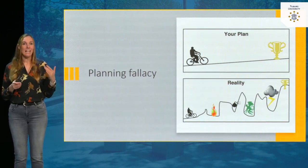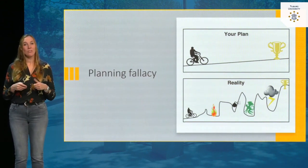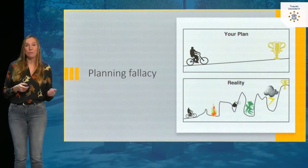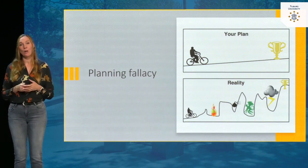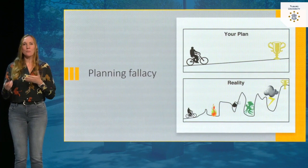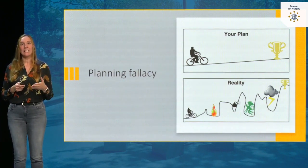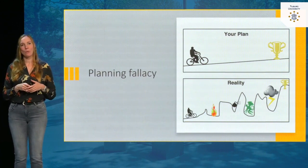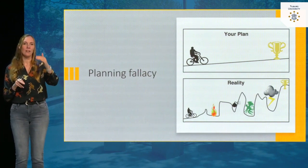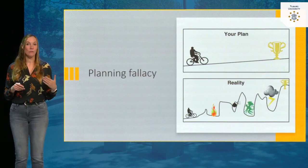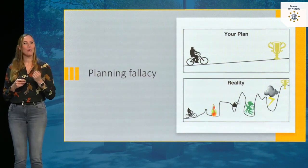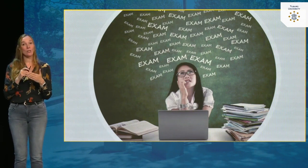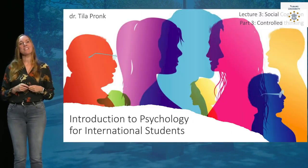We fail to realize that reality is often different — you might get sick, get distracted, or your relationship might fall apart. We tend to ignore the obstacles still in our way. The planning fallacy is another example of unrealistic optimism and exaggerated self-esteem — we think we're going to rock it, while things are often more difficult than expected. So keep this in mind early in the course: avoid the planning fallacy and make sure your plan accounts for the obstacles you'll encounter. Thanks for watching — this is the end of the lecture.